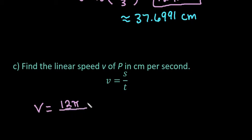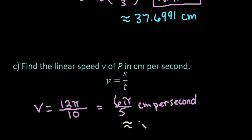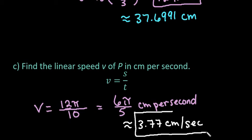So we're going to take our 12 pi centimeters, and then we're going to divide it by our time, which is 10 seconds. And so if we simplify this, we end up with 6 pi over 5 centimeters per second. So again, this would be your exact value. And if we converted this into an approximate, we would just plug this into our calculator, and we end up with 3.77 centimeters per second. So the linear speed that this point is traveling is 3.77 centimeters per second.